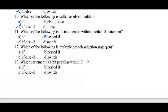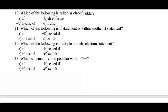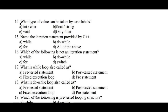Question number twelve: which of the following is a multiple-branch selection statement? Options: A: if, B: nested if, C: if-else-if, D: switch. The switch statement is the multiple-branch selection statement, hence option D is the right answer. Question number thirteen: which statement is a bit peculiar within C++? Options: A: if, B: nested if, C: if-else-if, D: switch. The switch statement is a bit peculiar in C++. Question number fourteen: what type of value can be taken by case labels? Option A: int or char, B: float or string, C: wild, D: only float. A case label will receive either integer or character type data, hence option A is the right answer.